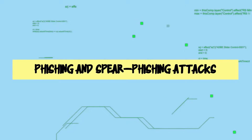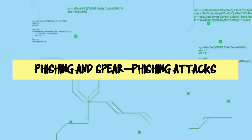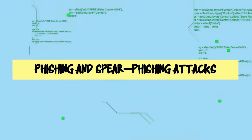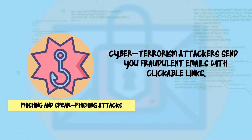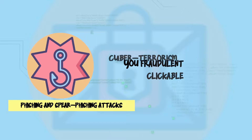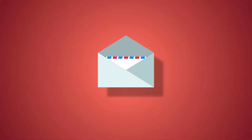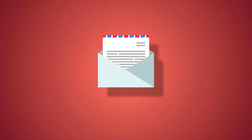Number two: phishing and spear phishing attacks. The phishing attack is where cyber terrorism attackers send you fraudulent emails with clickable links. These attackers aim to steal your personal information. Cyber terrorists also use these types of cyber attacks to install malicious software on your computer.